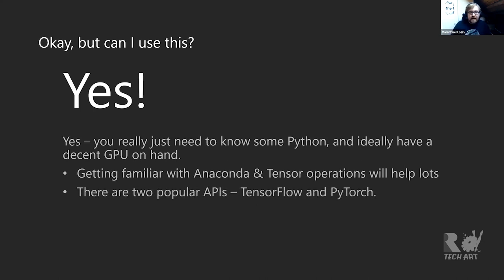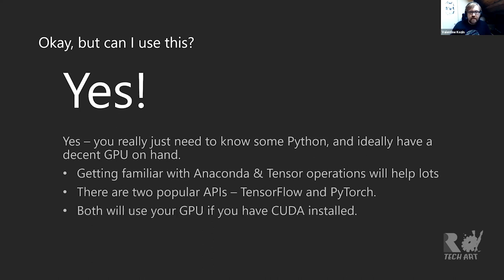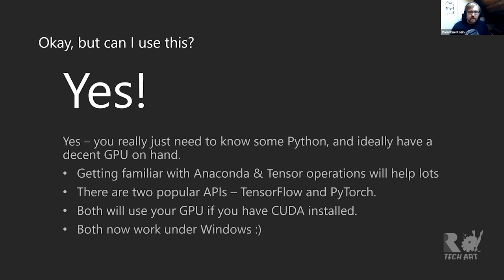There are two popular APIs: TensorFlow and PyTorch. TensorFlow is more Google-aligned; PyTorch is more Facebook-aligned. Both are open and free. If you've got an NVIDIA GPU with CUDA installed — and it does need to be NVIDIA at the moment, with relatively little AMD support — they'll run really quickly. You can technically still do inference on your CPU. Both work under Windows now and have really good tutorials, which was not the case two or three years ago.